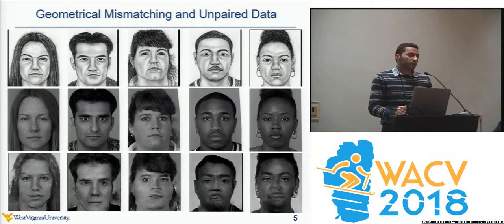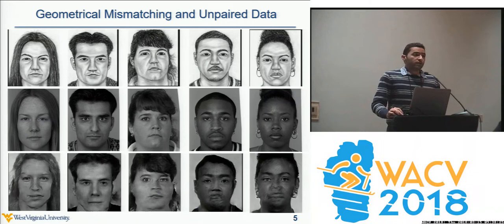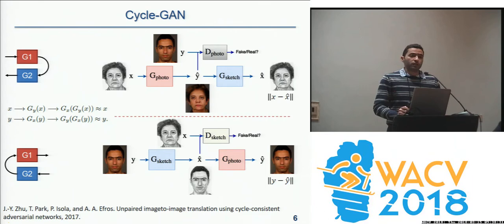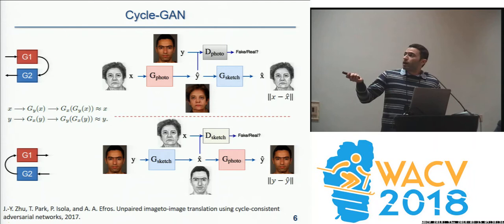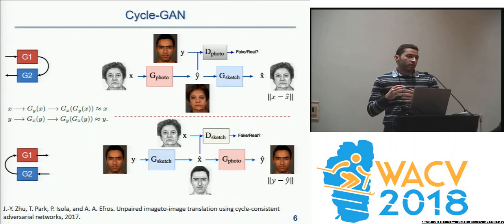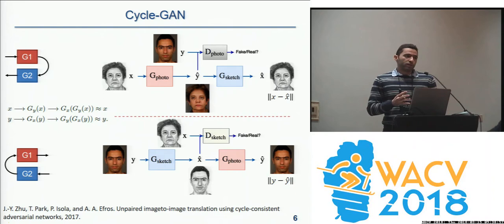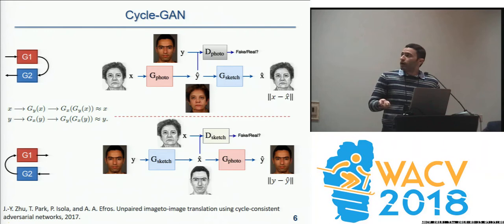We need an approach that allows training the network in an unpaired fashion. Fortunately, there is a variant of GAN called CycleGAN that handles unpaired training. The key idea in CycleGAN is that instead of applying an L1 norm between the synthesized image and its corresponding ground truth, we reconstruct the input — the hand-drawn sketch — from the synthesized image, and then apply the L1 norm between the reconstructed input and the original input. This way there's no direct L1 norm between the synthesized image and ground truth, and we don't need to worry about geometrical mismatching.